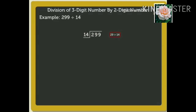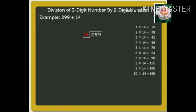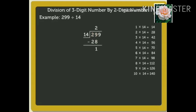Look here. As the divisor is 14, the nearest product of 29 is 28. Therefore, we write 2 in the quotient above 9 in the tens place and 28 under 29. Now, subtract 28 from 29, which equals 1. Lastly, bring down the next digit, that is 9.